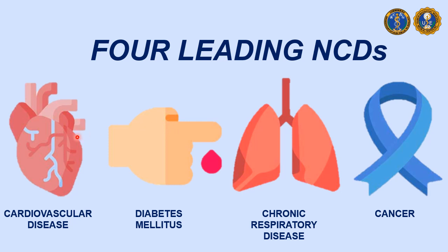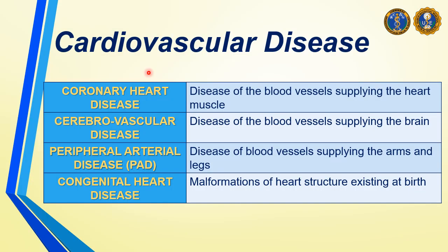Now let me discuss the four leading NCDs globally: cardiovascular diseases, diabetes mellitus, chronic respiratory disease, and cancer. There are many diseases that can be classified under cardiovascular disease. Number one is coronary heart disease — the main problem is the coronary vessels or the blood vessels supplying oxygen to the heart. Next is cerebrovascular disease, which involves problems with the blood vessels supplying oxygen to the brain. Next is peripheral arterial disease or PAD, affecting blood vessels supplying the peripheral extremities — the arms and legs. And lastly, congenital heart disease — malformations or deformities present at birth.